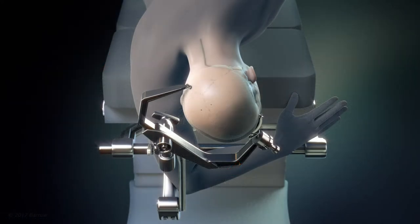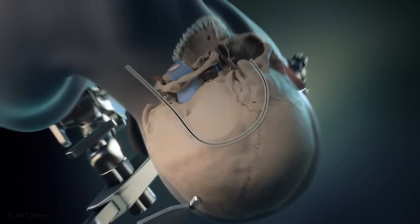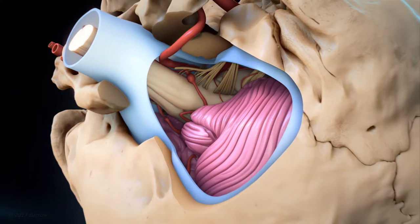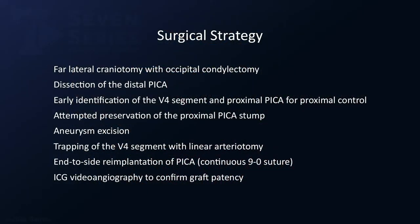A far lateral craniotomy was selected to treat this aneurysm. This animation shows the patient position, skin incision, and the craniotomy used. Surgical strategy consisted of a far lateral craniotomy with aggressive occipital condylectomy, dissection of the distal PICA, early identification of the V4 segment and proximal PICA for proximal control, attempted preservation of the proximal PICA stump as a potential donor, aneurysm excision, trapping of the V4 segment with a long linear arteriotomy, to-site re-implantation of PICA, and ICG videoangiography to confirm graft patency.